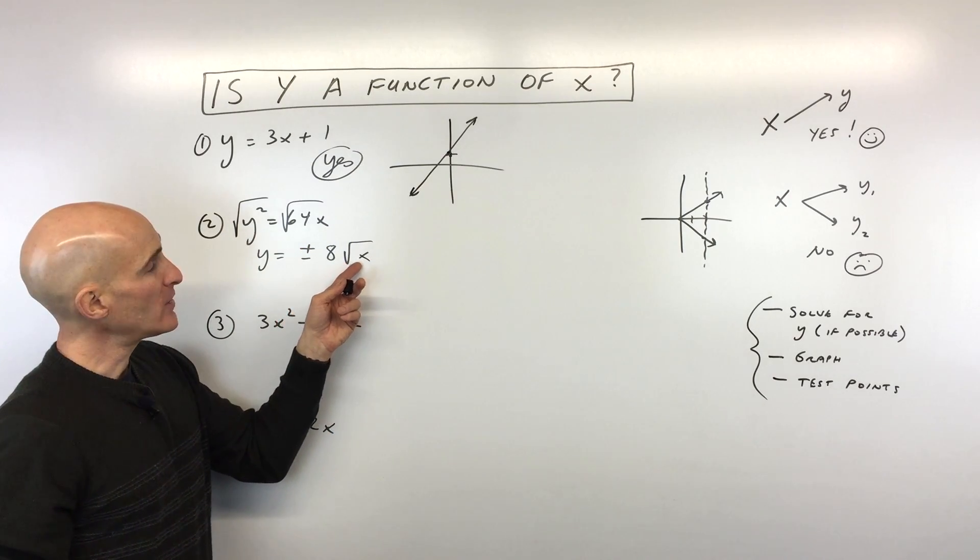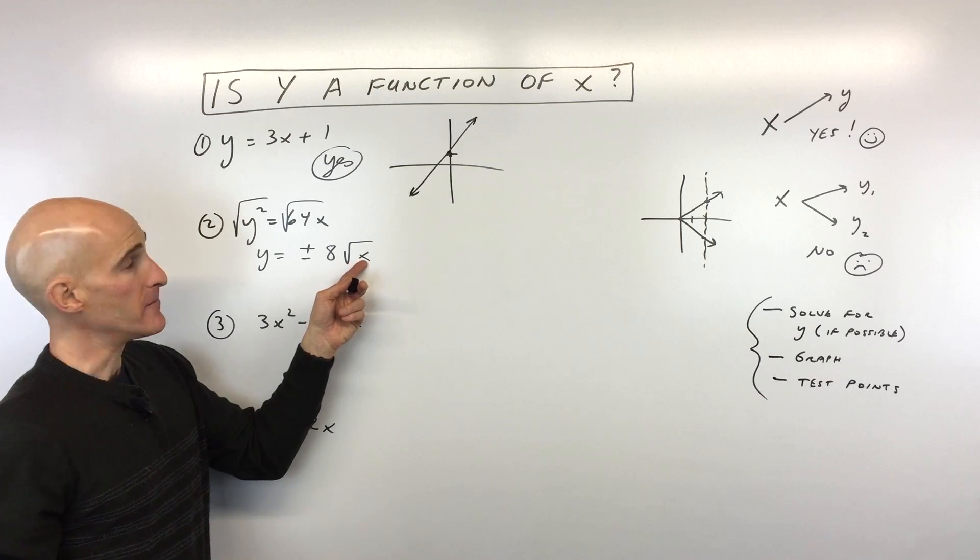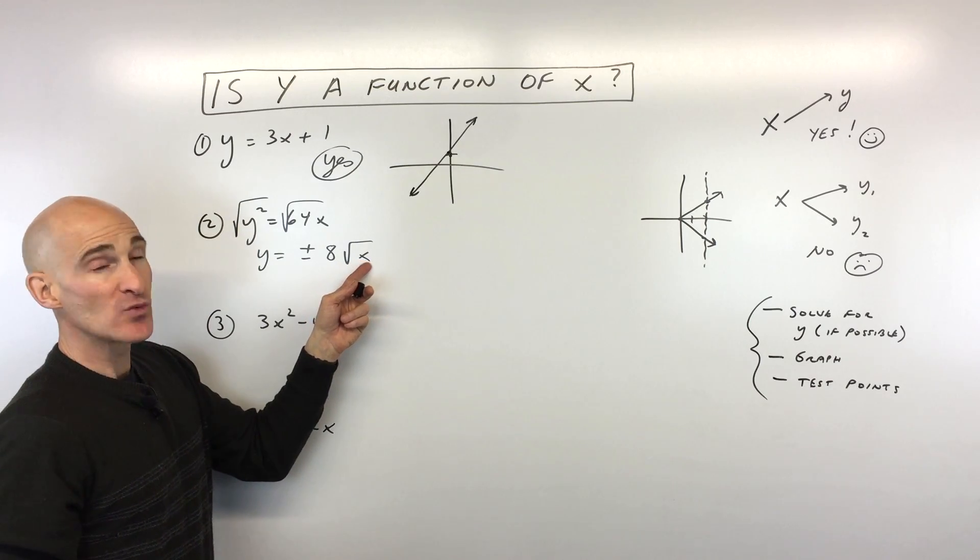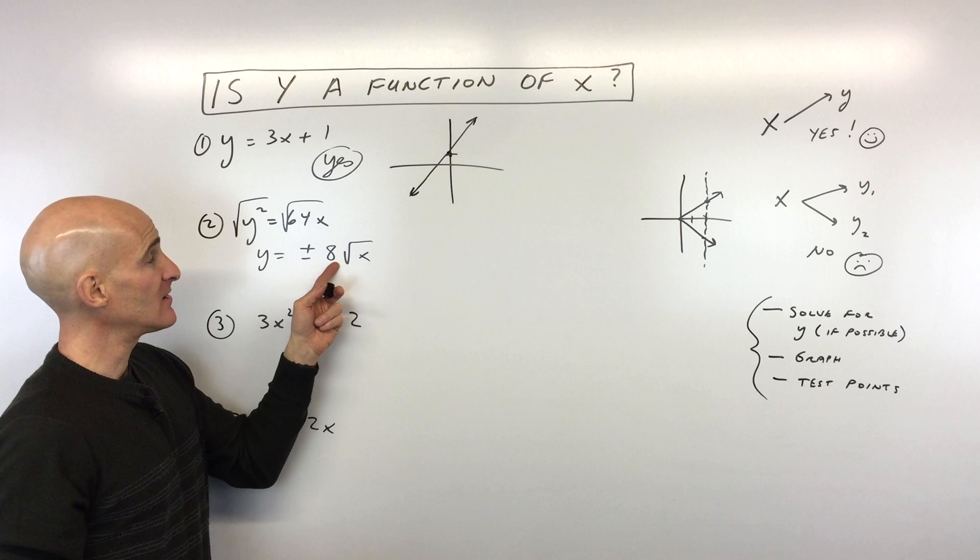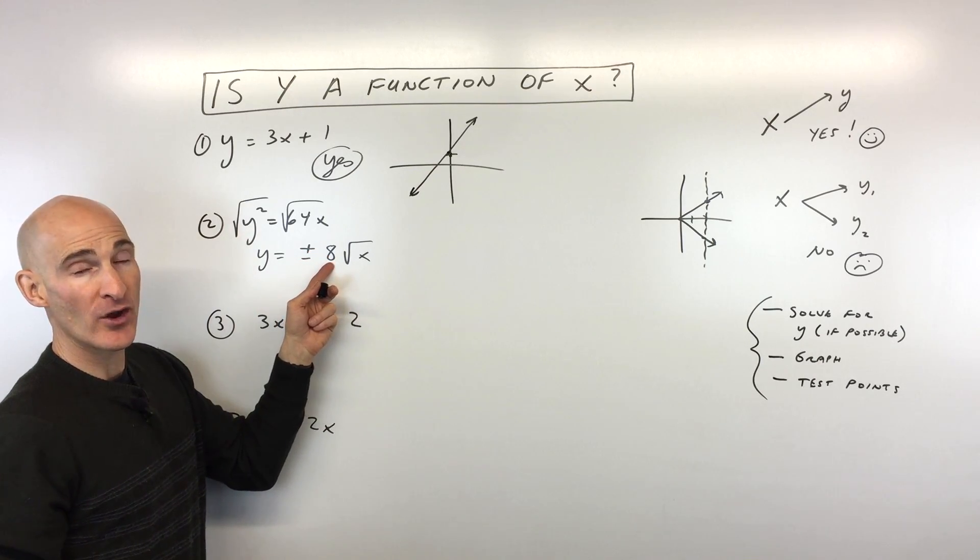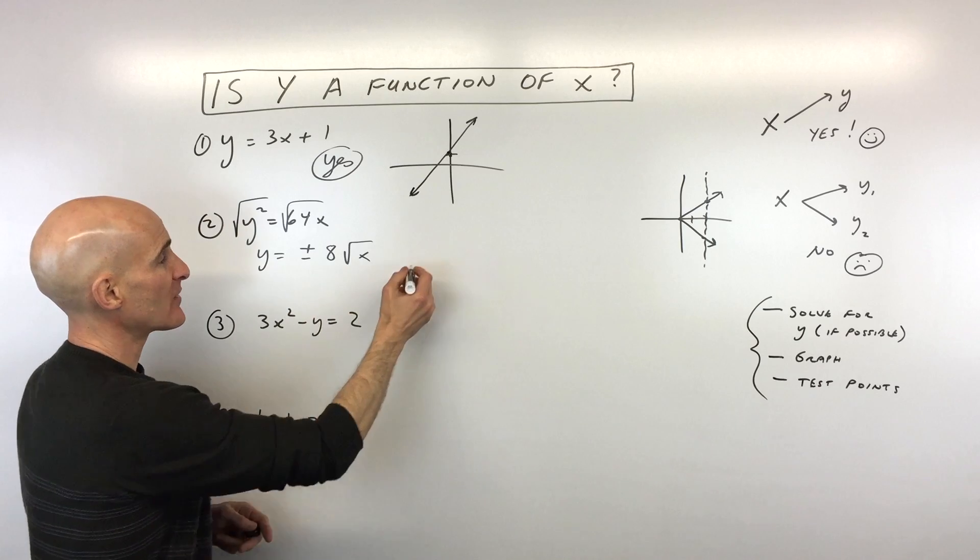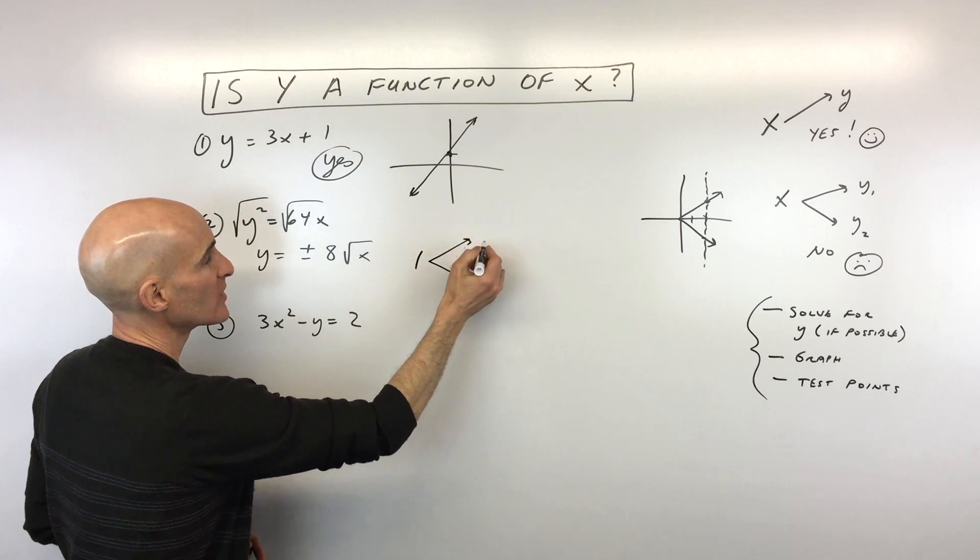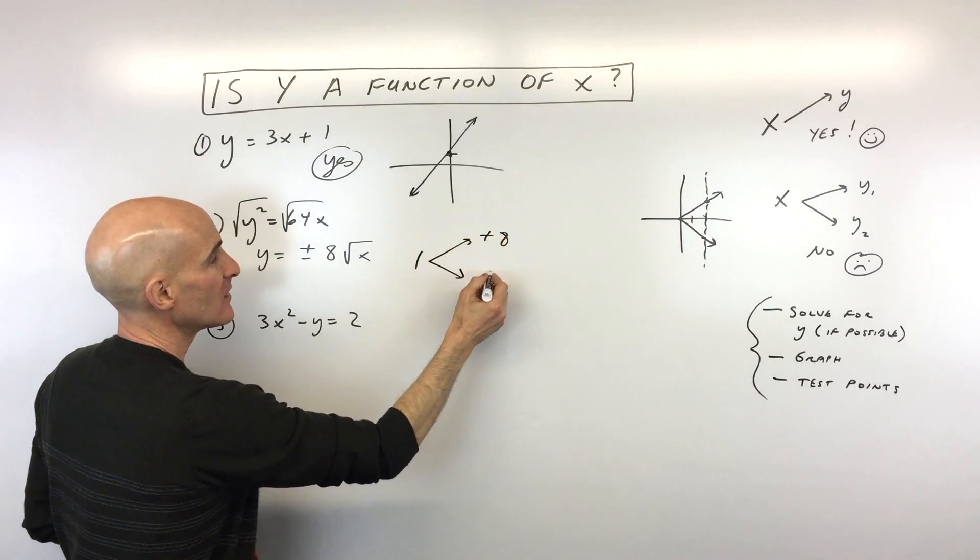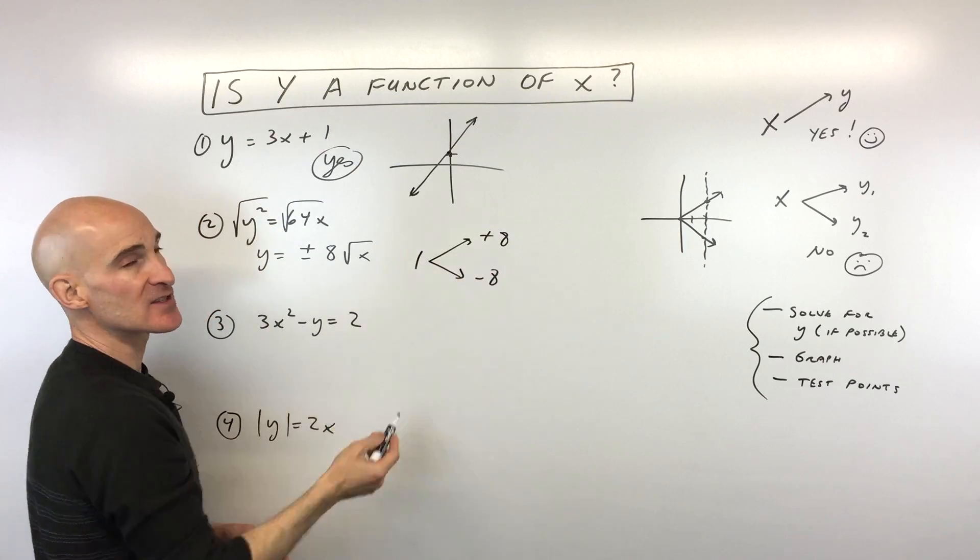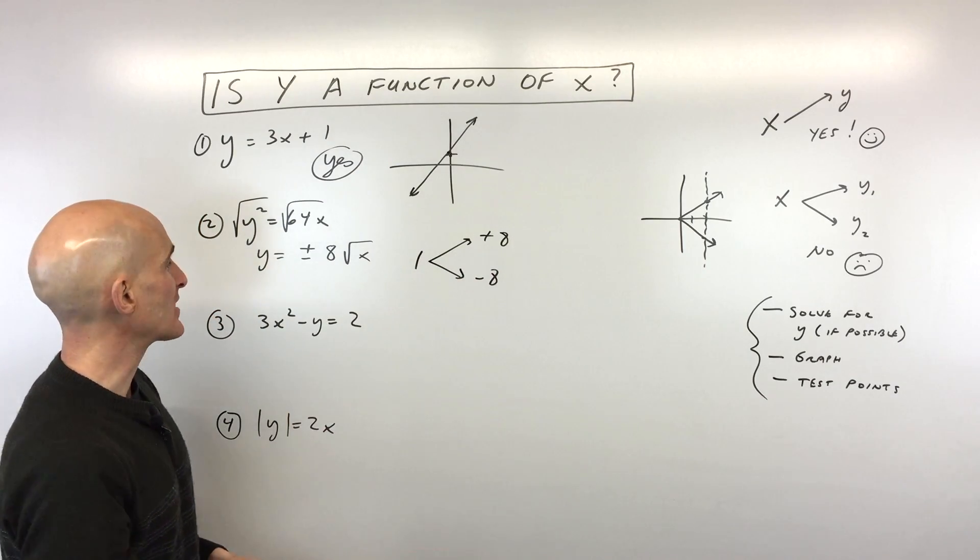Now, let's analyze this a little bit. If I put in, let's say, for example, x equals 1, right? Square root of 1 is 1 times 8 is 8. But you see we're getting positive 8 and also negative 8, right? So for that one input, x equals 1, we're getting an output of positive 8 and negative 8. So that tells us that y is not a function of x.